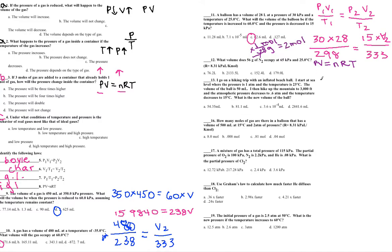Plugging into PV = nRT: pressure is 65 kPa (already correct units), V is unknown, n = 2 moles, R = 8.31, and temperature is 25°C + 273 = 298 K. So V = (2 × 8.31 × 298) ÷ 65 = 76.2 liters — answer A.